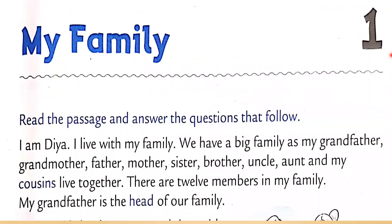Lesson number one: My Family. I am Dia. I live with my family. We have a big family — my grandfather, grandmother, father, mother, sister, brother, uncle, aunt and my cousins live together. There are 12 members in my family. My grandfather is the head of our family. After reading, we can see that there is a girl named Dia who is telling us about her family.